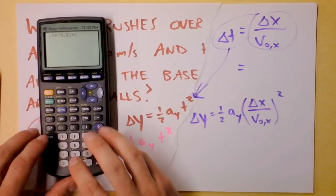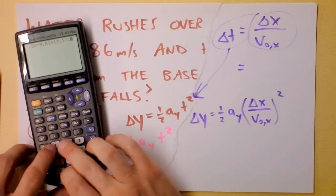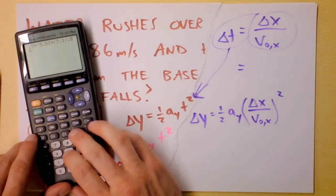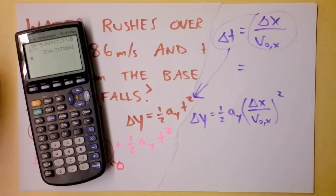The delta x. I think our delta x was supposed to be 7.1 meters and then I'll divide it by the initial velocity in the x direction which was 0.86 meters and I will close my parentheses and I will square that quantity and then I'm going to write the answer down.